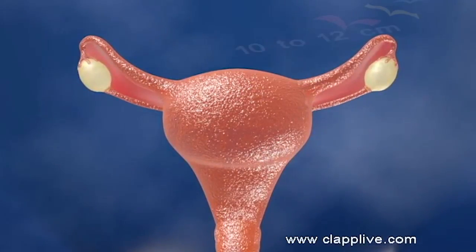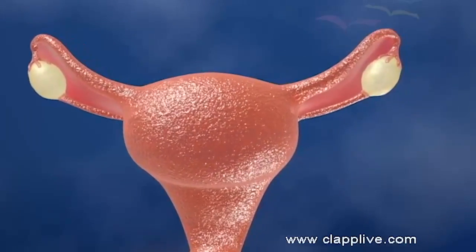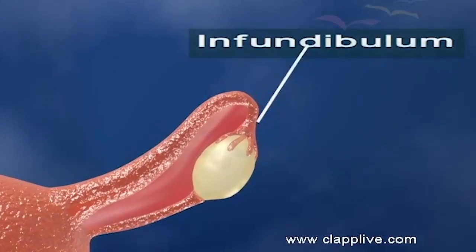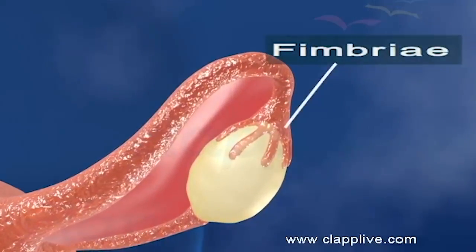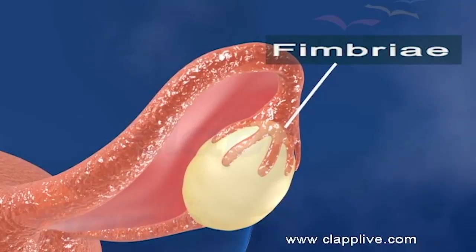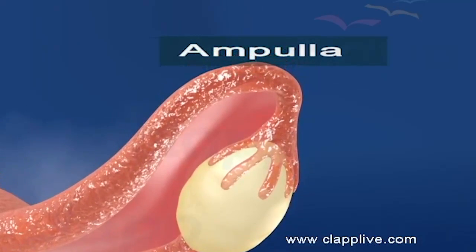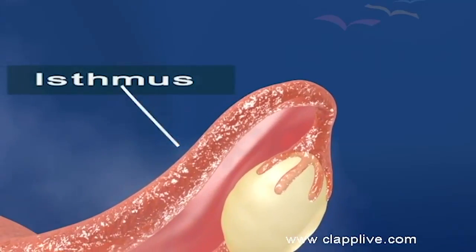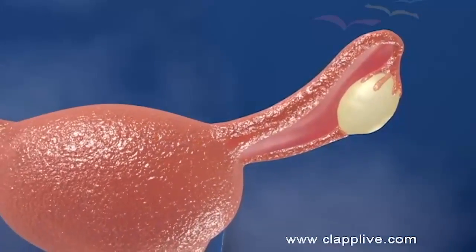Fallopian tubes or oviducts are narrow tubes about 10 to 12 centimeters long, connecting the ovary to the uterus. Each oviduct is differentiated into three parts: the infundibulum, the ampulla, and the isthmus. The infundibulum is the funnel-shaped proximal part and has finger-like projections called fimbriae at its margin. Fimbriae are very close to the ovaries and receive the egg released from the ovaries. The ampulla is the wider part of the oviduct next to the infundibulum, lined by ciliated epithelium. The isthmus is the short, narrow, and straight part that follows the ampulla and connects with the uterus.